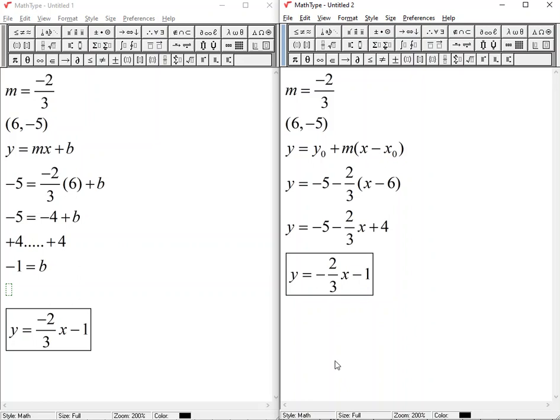So both get us the same result in approximately the same number of steps. The difference is that in the slope intercept form, I have to replace the letters x and y with the coordinates, solve for b, and then re-substitute m and b back into slope intercept form to get the equation.